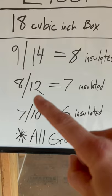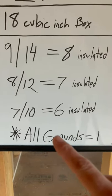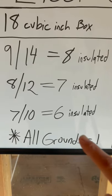For instance, this 12 wire can get eight wires total, seven insulated, and then let's say there was two wires coming in, all those grounds would count as just one.